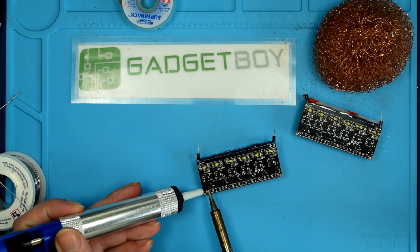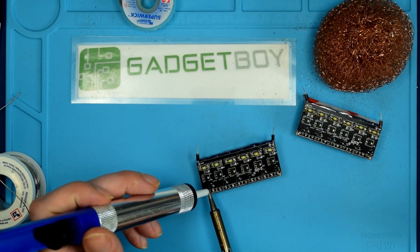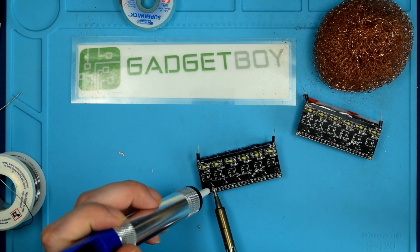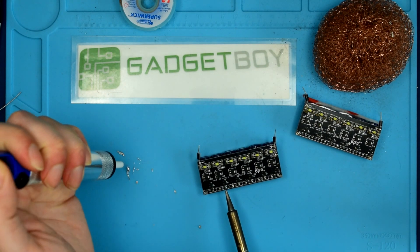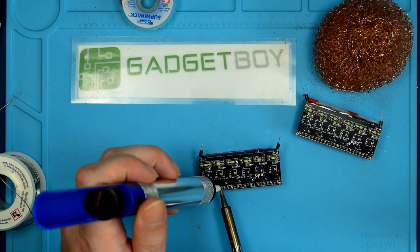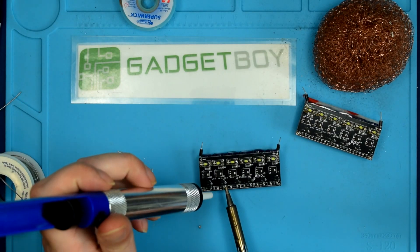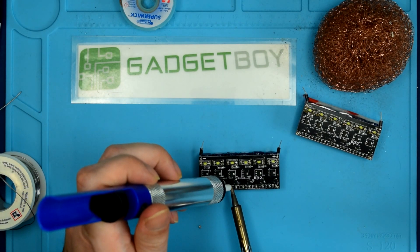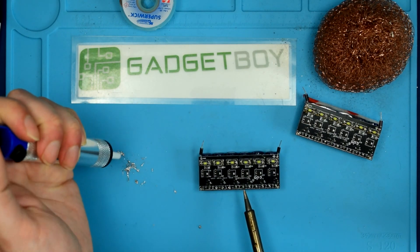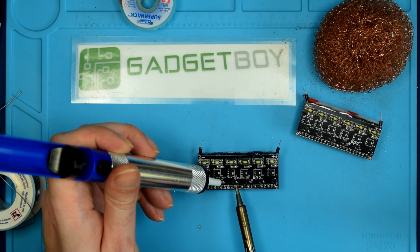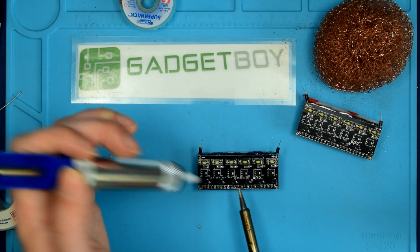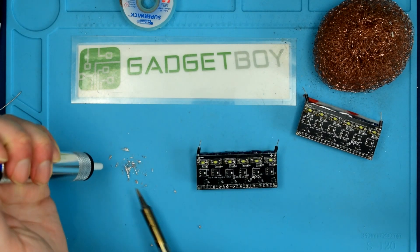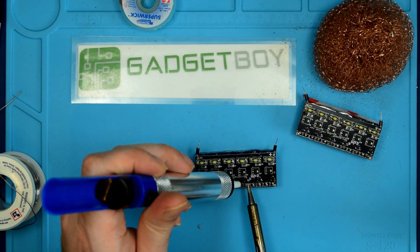I'm just going to start by desoldering the old solder as much as I can. This is going to be kind of a messy, long process, but also kind of interesting. We've got to remove as much of the excess solder as we can using the vacuum desoldering tool. Making a little pile of solder shavings here.